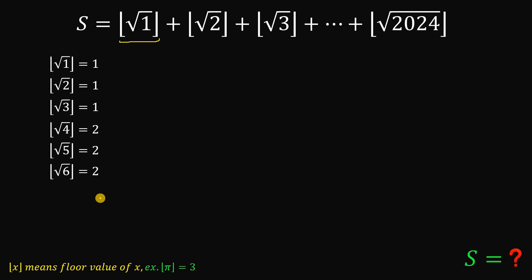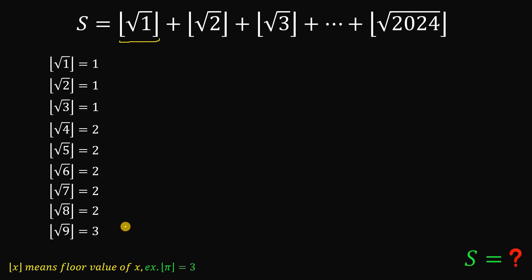The floor value of square root of 6 is 2, square root of 7 is 2, square root of 8 is 2. But the floor value of square root of 9 — since square root of 9 is a perfect square — is now 3. From here, let's make some observations.